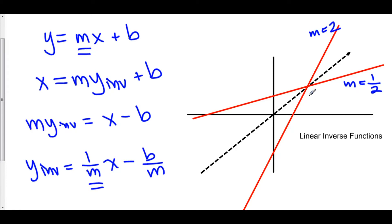As a visual example, we know that inverse functions are symmetric about the line y equals x. So consider some line with slope 2. We now know that the inverse of that slope is going to be 1 over 2.